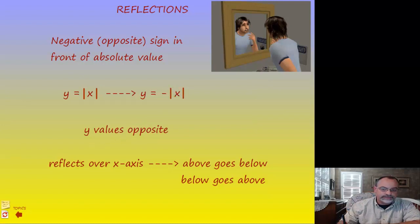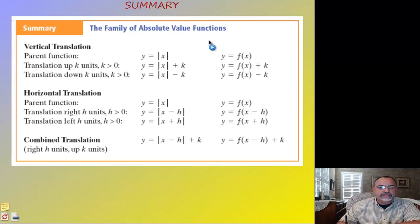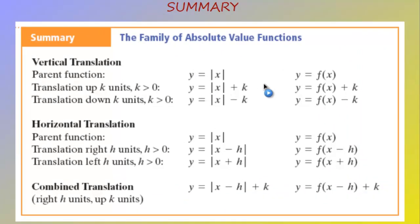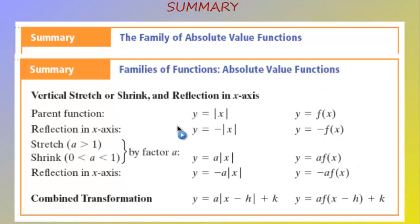We're going to summarize everything we've learned in a table. We have the vertical and horizontal translations from the last lesson, and now we add the negative sign — which reflects values over the x-axis — and the 'a' value in front, which is a vertical stretch or shrink. You can combine all of these into one equation with multiple transformations on one parent function.